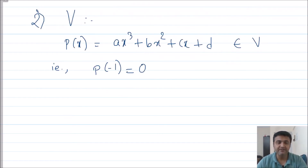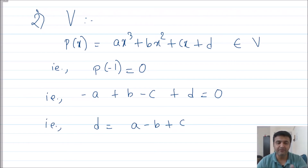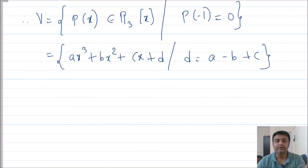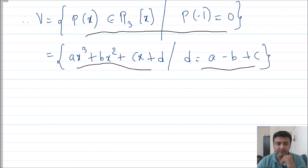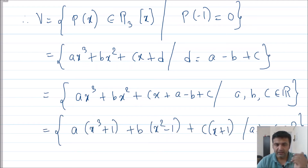V consists of polynomials that have minus 1 as a root, meaning the polynomial vanishes when x is replaced by −1. Substituting gives −a + b − c + d = 0, so d = a − b + c. You substitute this condition into p(x), then factor out a, b, and c as common terms to identify the spanning polynomials.